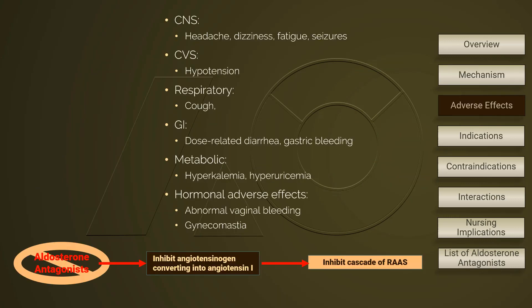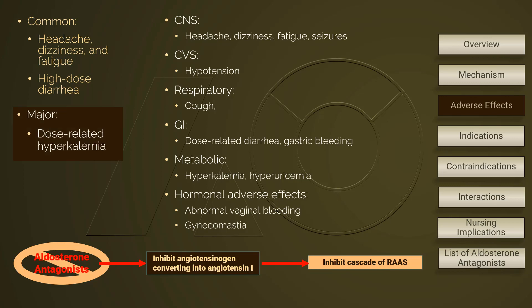Adverse effects are dose-related. High-dose adverse effects include diarrhea, headache, dizziness, and fatigue. High-dose hyperkalemia is the worst adverse effect. Additionally, aldosterone antagonists affect hormonal balance — when they interrupt the mineralocorticoid effects, the progestogenic and anti-androgenic effects lead to abnormal vaginal bleeding and gynecomastia.